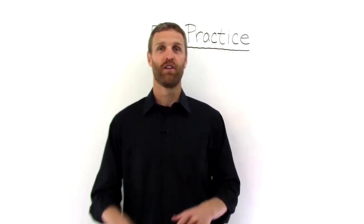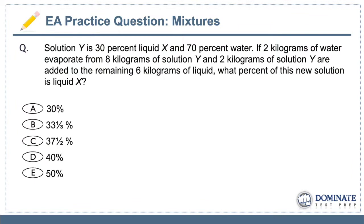But in this video, we are going to look at this question. So here you go. We have solution Y, that is 30% liquid X and 70% water. If two kilograms of water evaporate from eight kilograms of solution Y and two kilograms of solution Y are added back to the remaining six kilograms of liquid, what percent of this new solution is liquid X? And you have your answer choices. So it is a problem solving question, fairly straightforward in how it is addressed, and yet there are certainly challenging components to it. So go ahead, press pause, give it a try on your own, see how you do, and we'll come back and talk about it together.